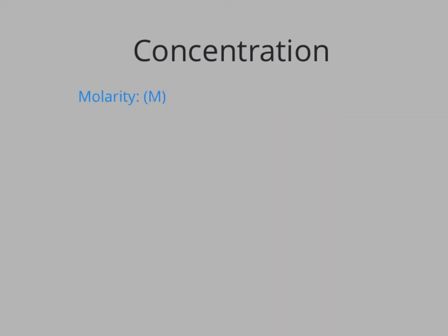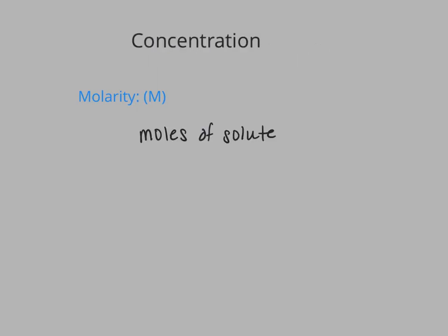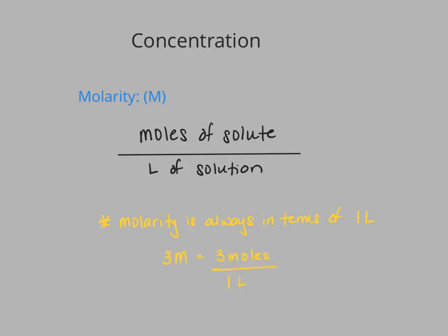Let's start by looking at by far the most common way to measure concentration: molarity, which is denoted by the capital M. To measure molarity, we take our moles of solute and divide by our liters of solution. What you have to remember is moles divided by liters, and molarity is always in terms of one liter. So for example, if we have a three molar solution, that's three moles of solute in one liter of solution.